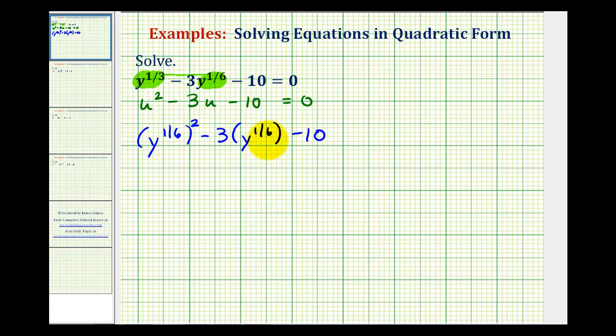Notice in this form, we can see that u would be y to the one-sixth. But let's check this first term. Here we have a power raised to a power, so we would multiply these exponents, one-sixth times two is two-sixths or one-third. Therefore, this is in quadratic form and we can now try to solve this by factoring.